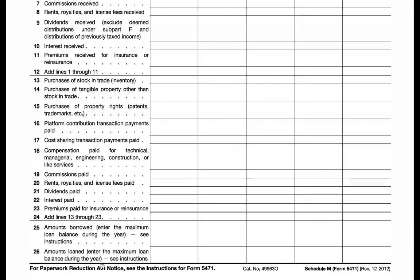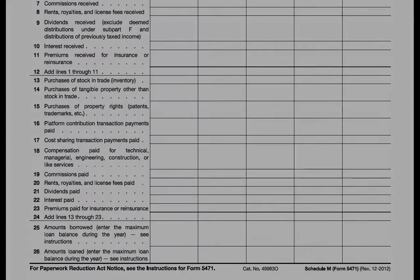On Line 26, the IRS wants to know about loans to U.S. persons because these are generally investments in U.S. property that can trigger taxable inclusions under Section 956. The IRS also wants to know about other intercompany borrowings to make sure that an arm's length interest rate is being charged on the loans.